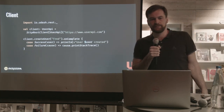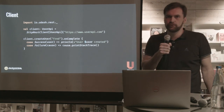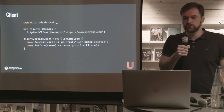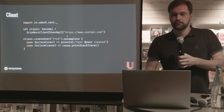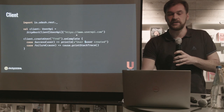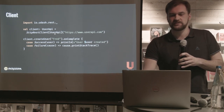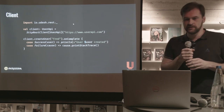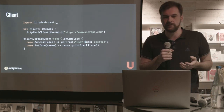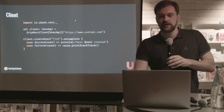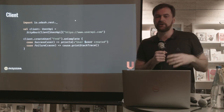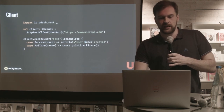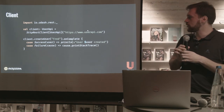On the client side, the default implementation provided in UDASH is based on the sttp library by Software Mill. We create a client which takes the address of the server and the type of the API trait, and we magically get an actual instance of this trait. This instance is a macro-generated proxy — when you call methods on it, it performs network communication with the server. Here we call the createUser method and, because it returns a Future, we can apply a callback and react to the result.